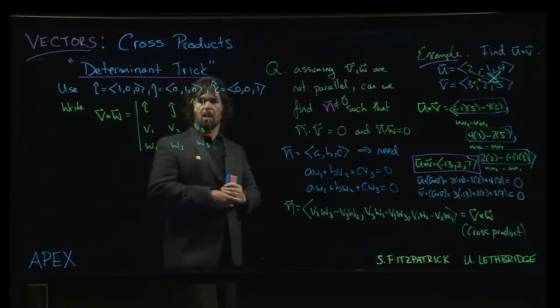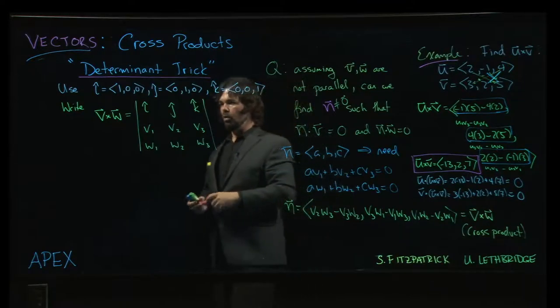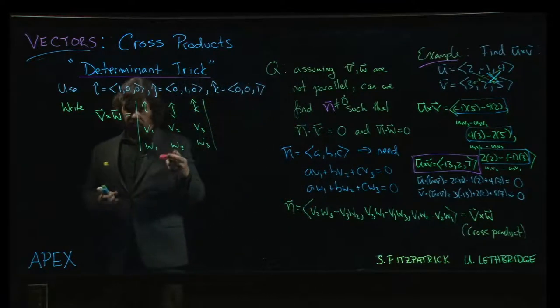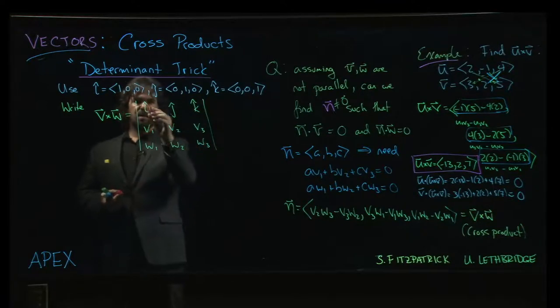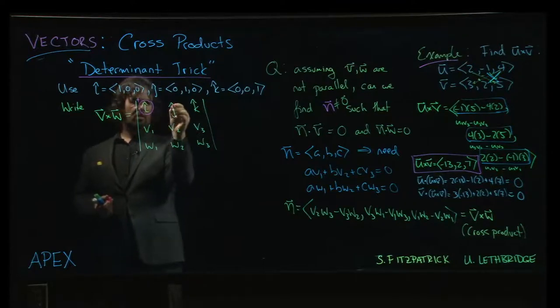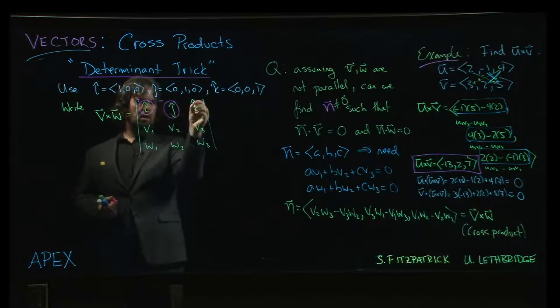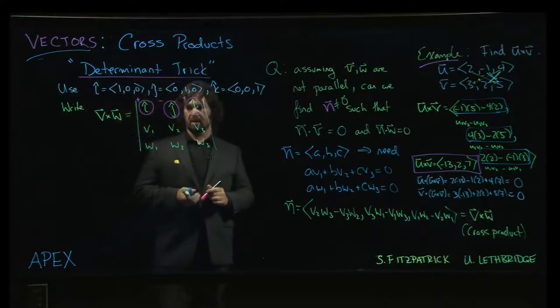What we do is expand along the first row using the same expansion rule that you do if you've done determinants in linear algebra. There are these alternating signs that go across: i, j, k—we go plus, minus, plus as we go from left to right across the top.